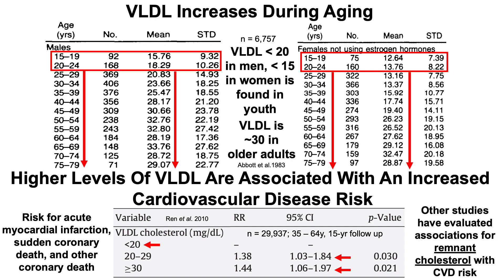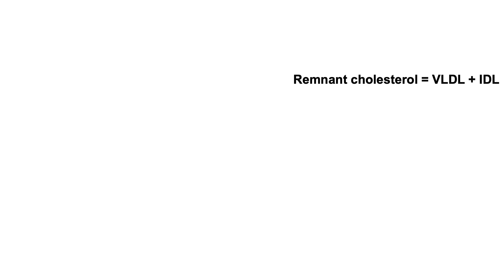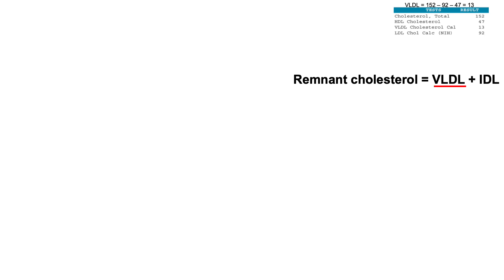Other studies have evaluated associations for remnant cholesterol with cardiovascular disease risk. Remnant cholesterol in the fasting state is defined as the sum of VLDL plus IDL. It may be that remnant cholesterol is almost exclusively VLDL. As a personal example, my last blood test shows total cholesterol, HDL, VLDL, and LDL. Using the remnant cholesterol calculation (TC minus LDL minus HDL), my VLDL equals 13 with no IDL — suggesting that studies reporting fasting remnant cholesterol are reporting almost exclusively VLDL.